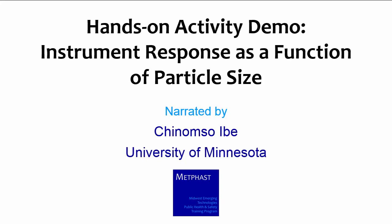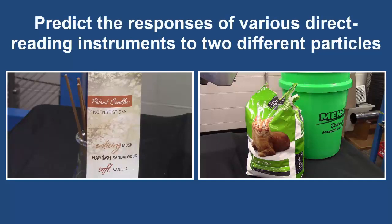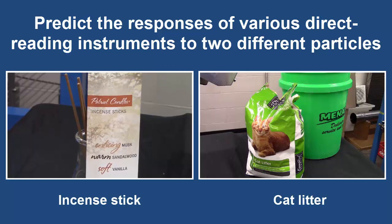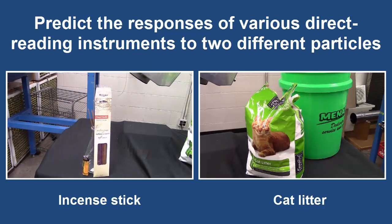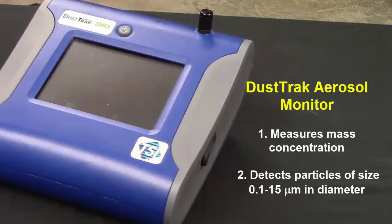I developed this activity along with Pete Rayner from the University of Minnesota and with support from TSI, makers of precision measurement instruments. The objective of this activity is to predict the responses of various direct reading instruments to two different particle sources with respect to the size-related property of the particles. Fine particles will be generated by the combustion of an incense stick and coarse particles will be generated by pouring a bag of cat litter into a container. The first direct reading instrument is a DustTrak aerosol monitor, which can measure mass concentration of particle sizes ranging from 0.1 to 15 micrometers in diameter.